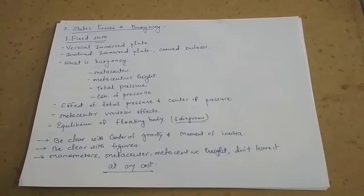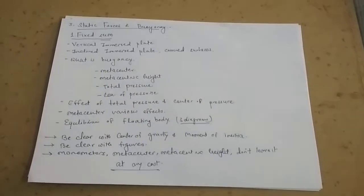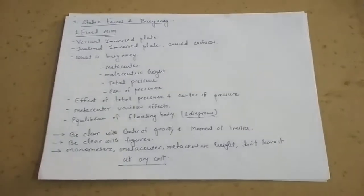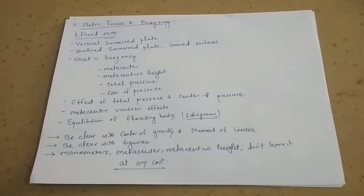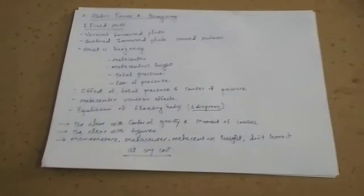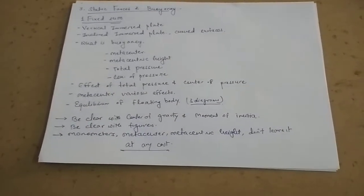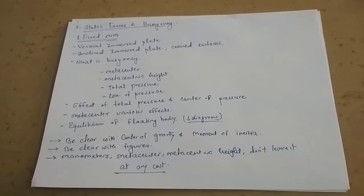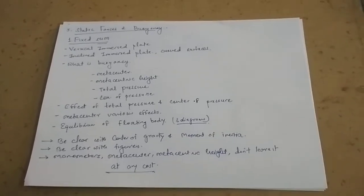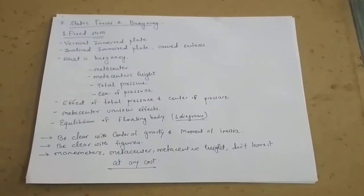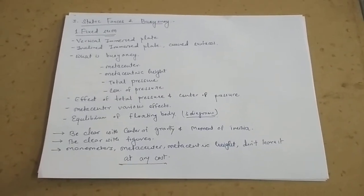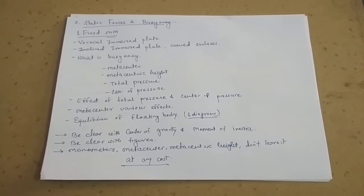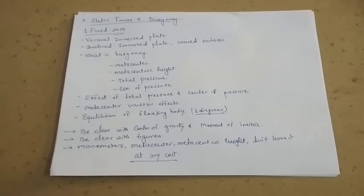What is buoyancy, metacenter, metacentric height, total pressure, center of pressure, effect of total pressure and center of pressure, and equilibrium of floating body. For vertical immersed plate, inclined immersed plate, and curved surfaces, there are other shapes like square, triangle, and other shapes they can ask sums from.